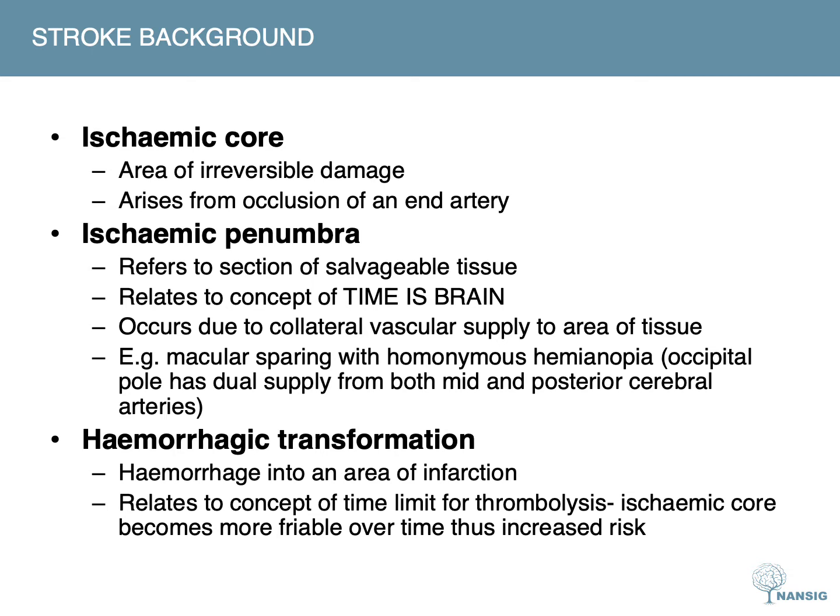There's the ischemic penumbra, which refers to an area of salvageable tissue, and that relates to the concept of 'time is brain' — what we try to reverse when we give thrombolysis and mechanical thrombectomy. That can be demonstrated with homonymous hemianopia, where you get macular sparing due to the occipital pole having a dual blood supply from both the middle and posterior cerebral arteries. Hemorrhagic transformation is where you get hemorrhage into an area of infarction, and that relates to thrombolysis and the time limits we set.